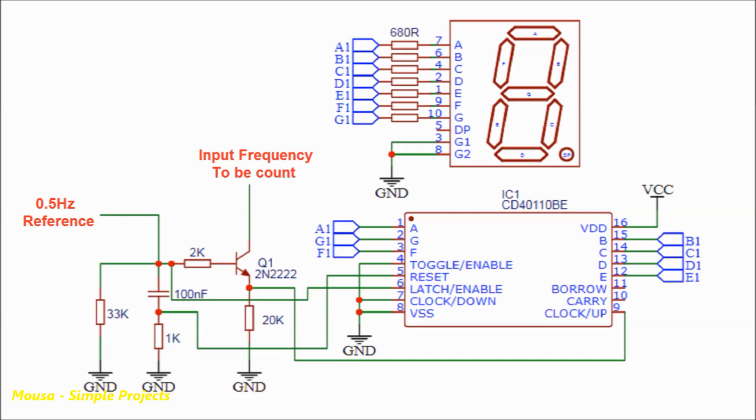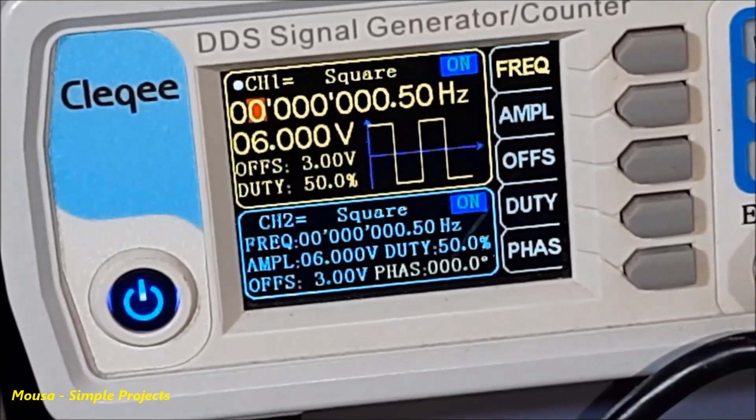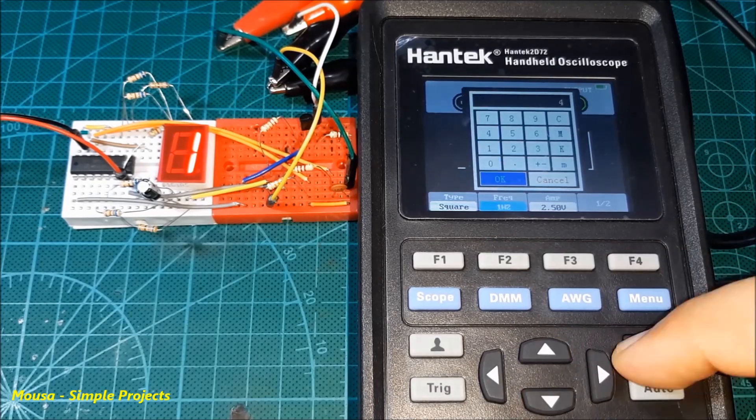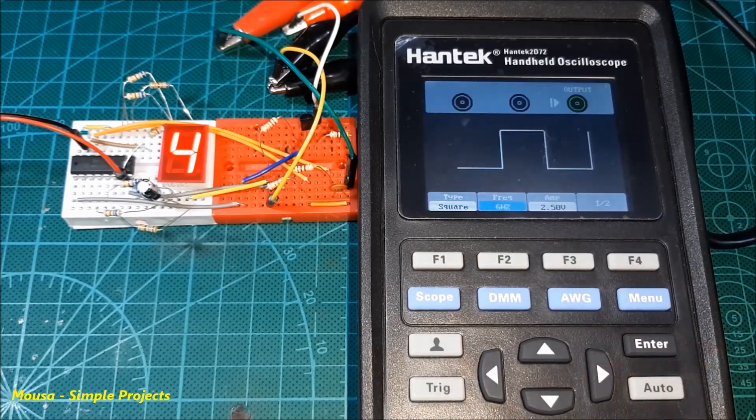The emitter of the transistor is connected to pin nine of the IC. This capacitor resets the IC every second and the latch enable is connected to 0.5 hertz oscillator. Here I take the 0.5 hertz from this function generator and the frequency to be tested from the second function generator. As you can see, it's working.